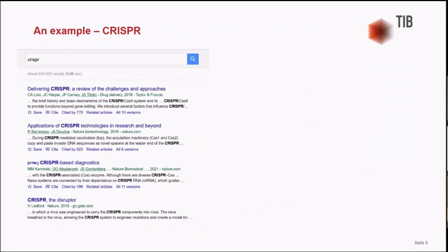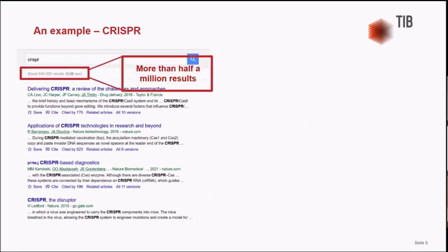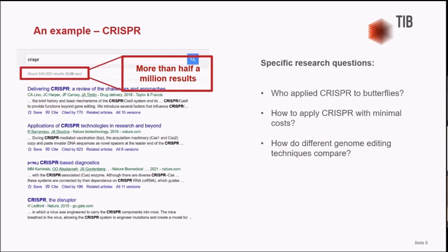I highlight this with an example using CRISPR, which is one of the techniques that won the Nobel Prize in 2020. This is a technique that edits the genome, and if you look for CRISPR in Google Scholar — I did it this morning — you would get more than a million results. Are these really useful? They are documents. If you want to ask specific questions about who applied a specific technique, how much it costs, whether you can adopt it in a resource-limited setting, and how different techniques compare to each other, you do not have an answer from Google Scholar.